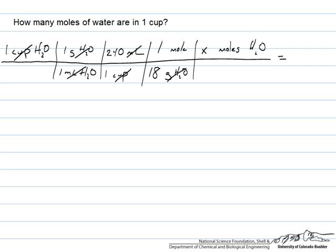So the only thing you have left to do is make these multiplications where you have 240 over 18 and that is going to give you the amount of moles of water. In this case it comes out to about 13.3 moles of water.